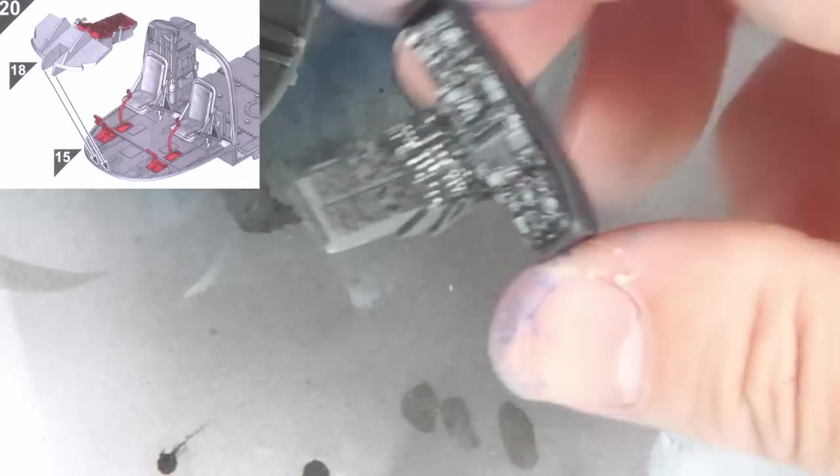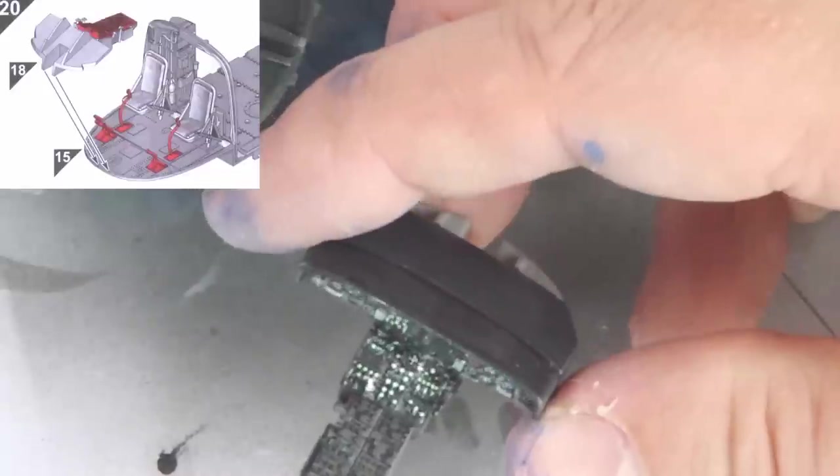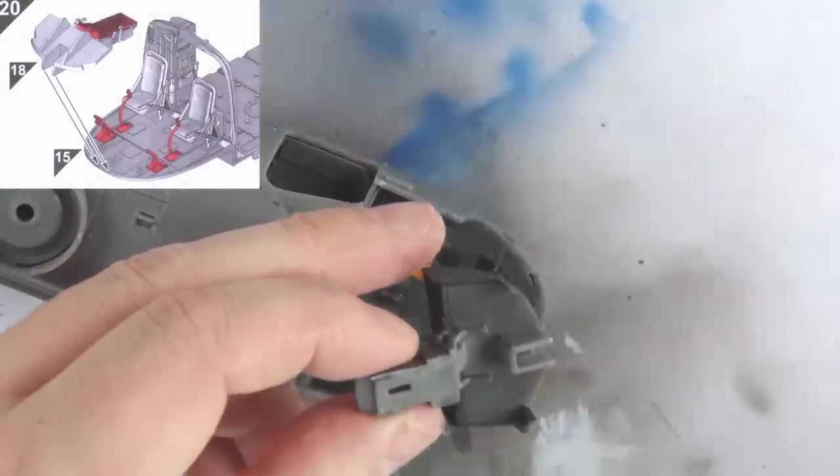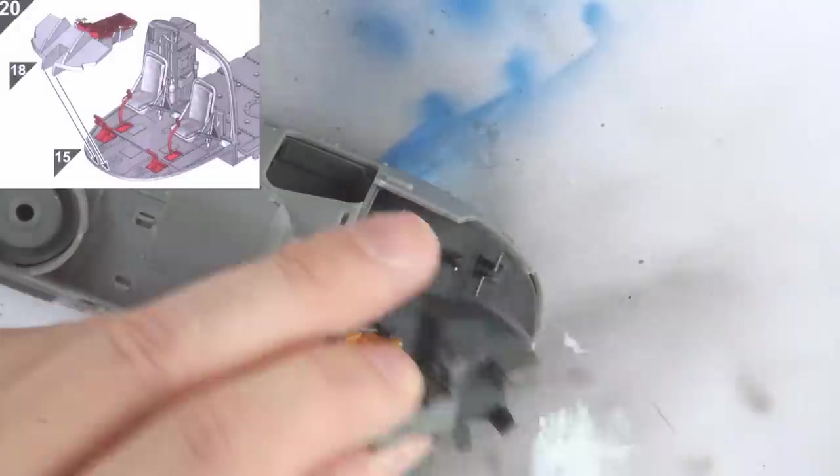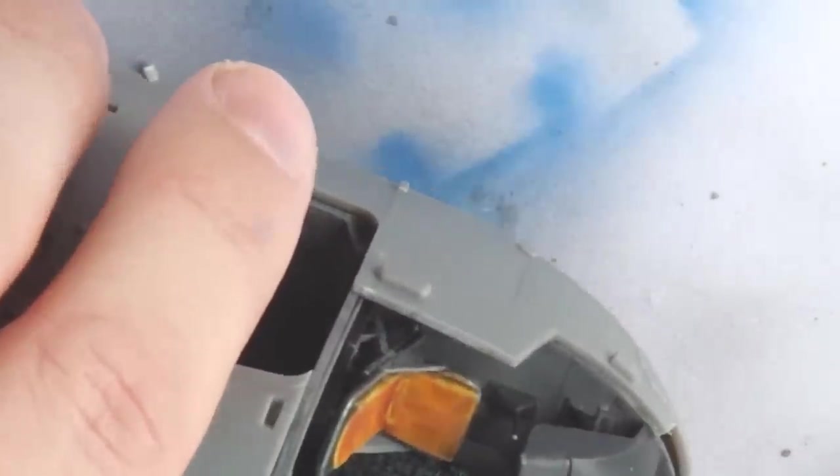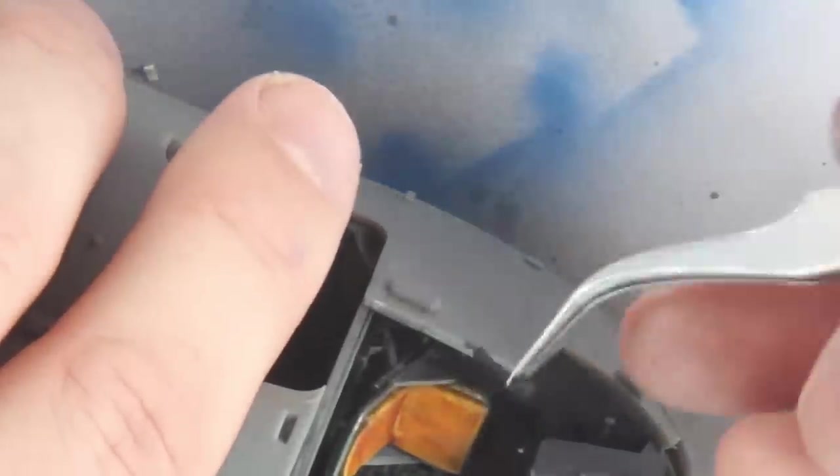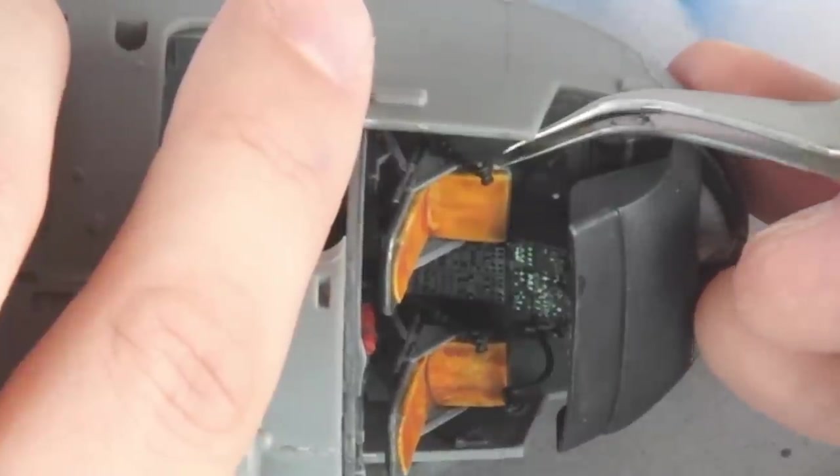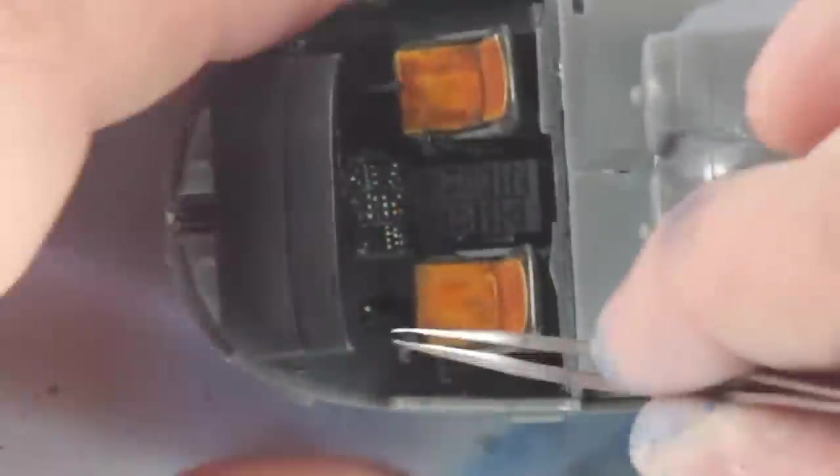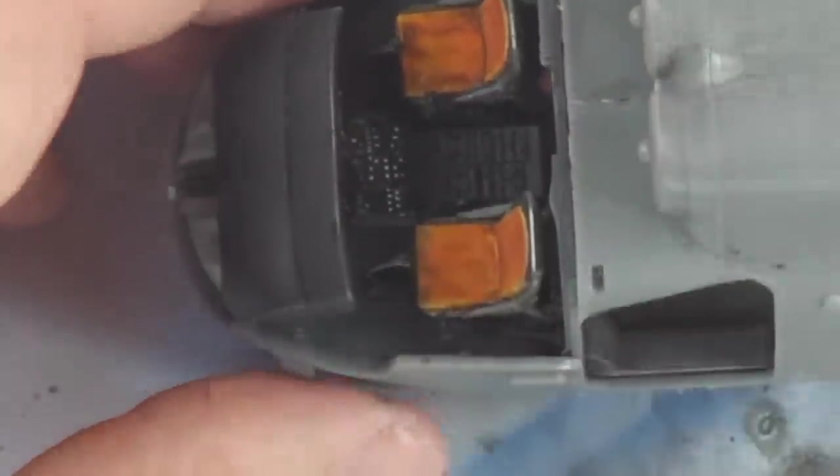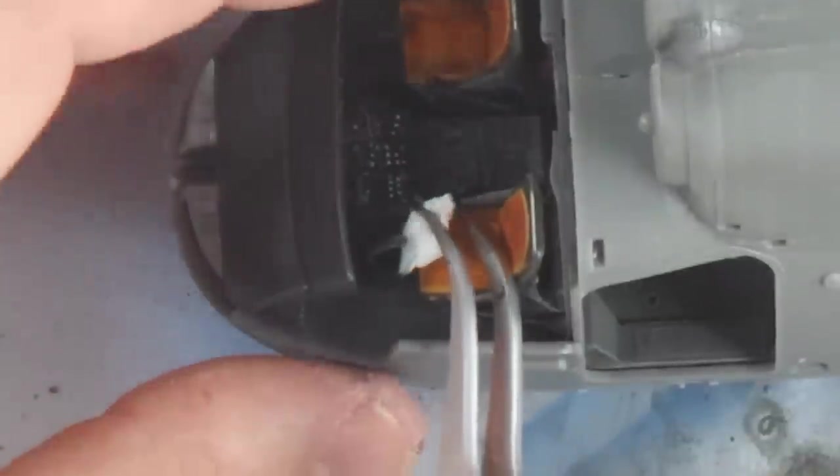All the way back now to step 20, as the painted and decalled instrument console assembly was added to the cockpit. I mentioned breaking some of these delicate controls earlier - here was where I put them back in place. I propped the control column up with a small piece of tissue just so it didn't droop whilst drying.